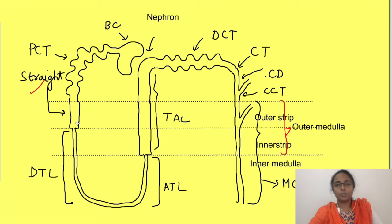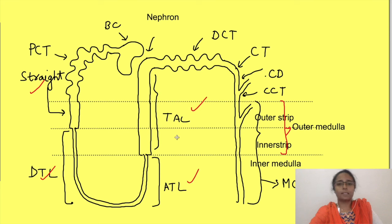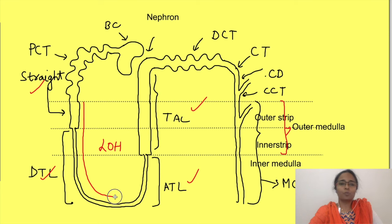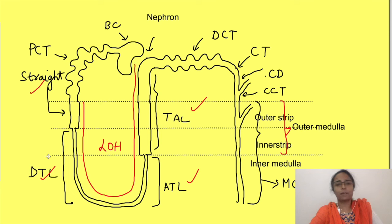The proximal straight tubule, descending thin limb, ascending thin limb, and thick ascending limb all together are known as the loop of Henle. So from here to here is the loop of Henle.